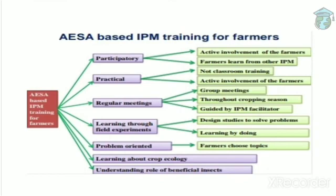Next is AESA-based IPM training for farmers. This will be participatory. In the Farmer Field School, FFS, farmers will be actively participating in all the work and all field operations. This is a participatory and practical approach — there is no classroom. They will hold meetings near a large field or under a large tree, with a group of trainers and 20 to 25 farmers. This is a natural classroom in FFS with active involvement of farmers.